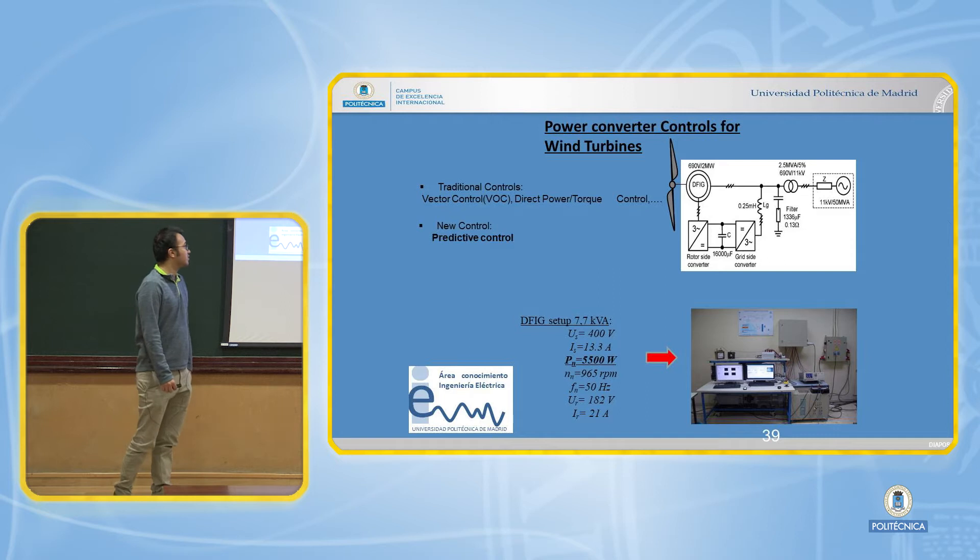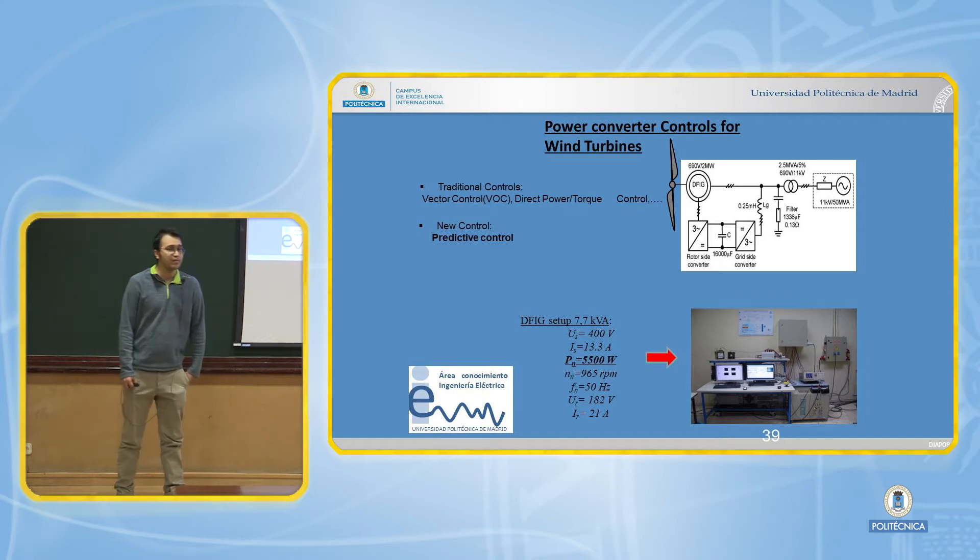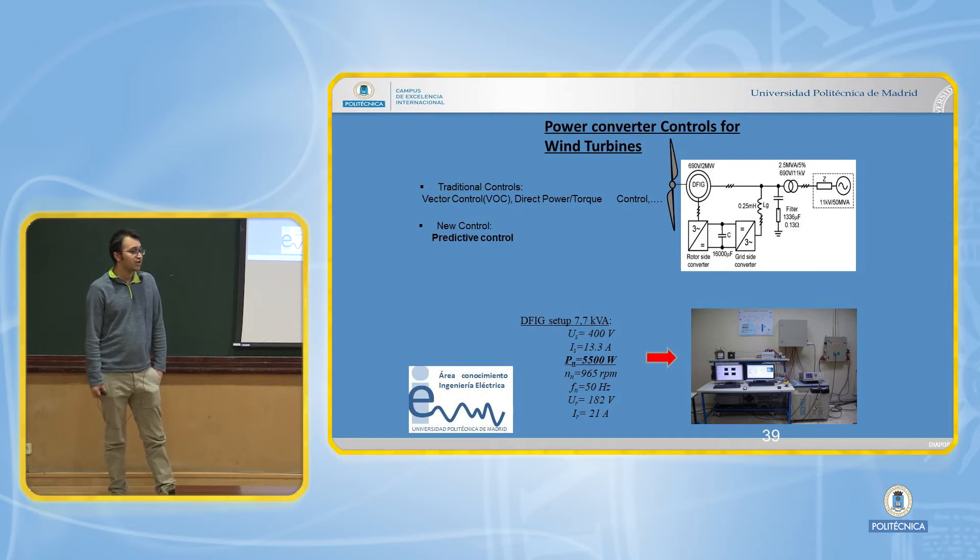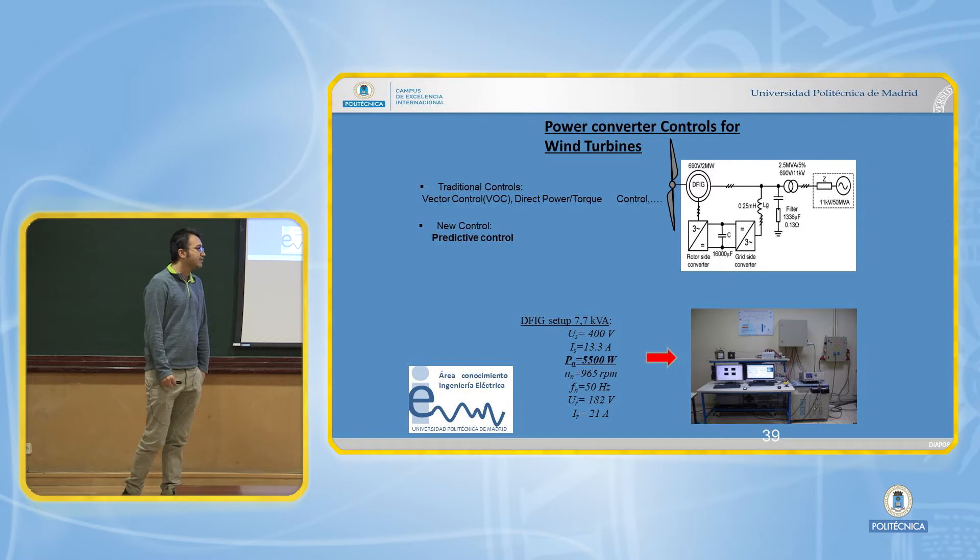These two converters traditionally are controlled with vector control and direct power control. But both have disadvantages. The vector control has a fixed switching frequency, low total harmonic distortion currents, and seems to work very well, but the dynamic performance is very slow.